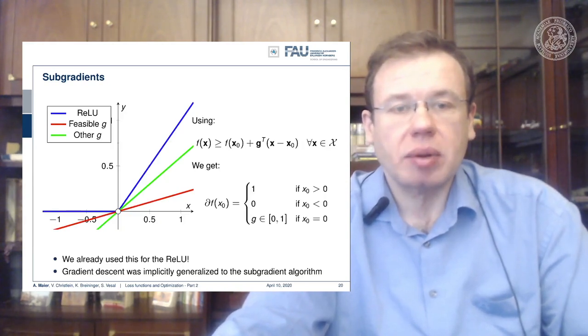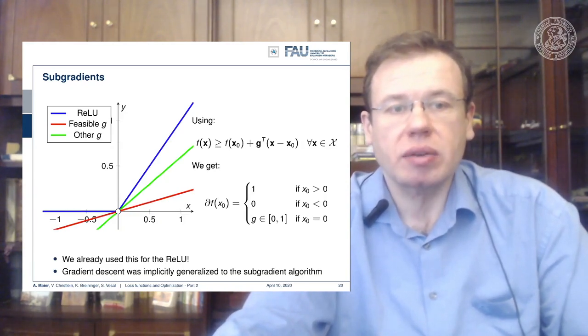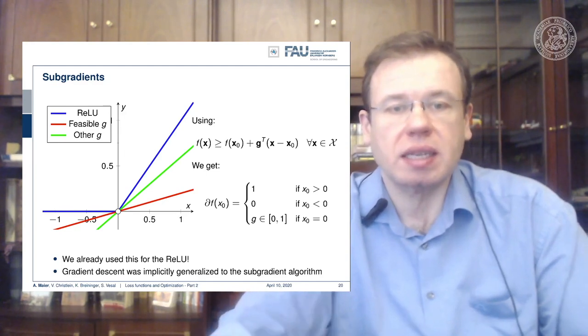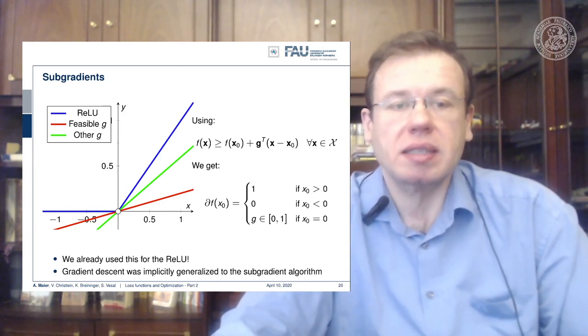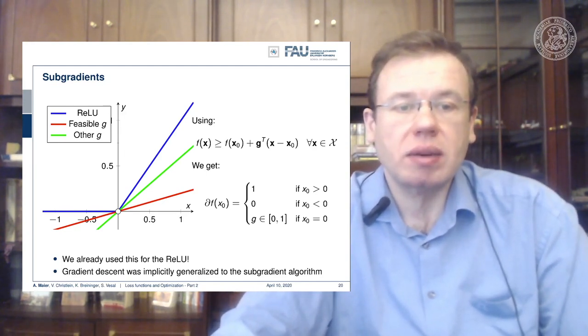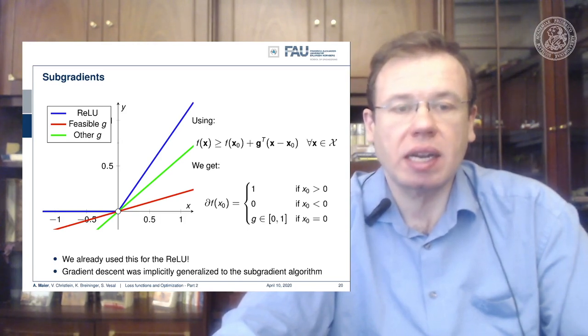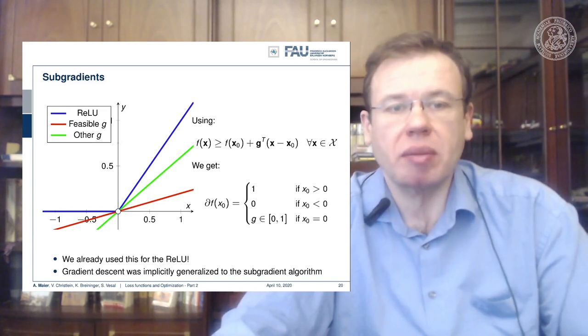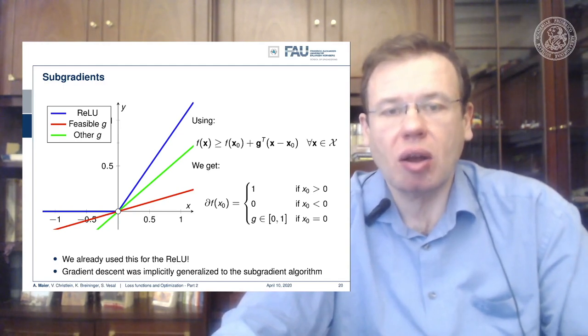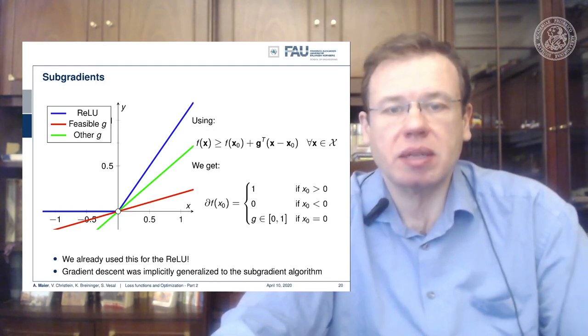In this example here, we have the rectified linear unit, which also has exactly the same problem, but again it's a convex function, which means here at the point where we have the kink we can find quite a few subgradients. Actually, you see the green line and the red line; both of them are subgradients, both of them are feasible subgradients, and they fulfill this property that they are lower bounds to that respective function.